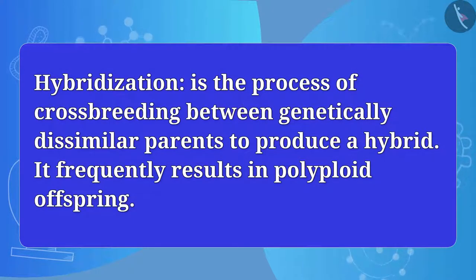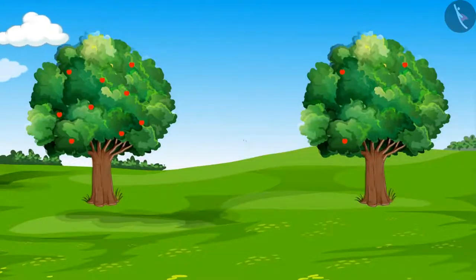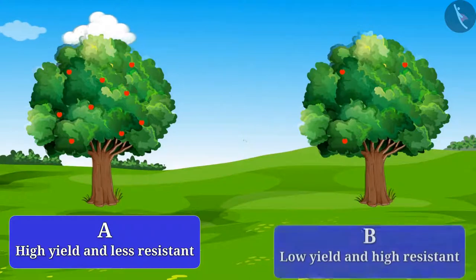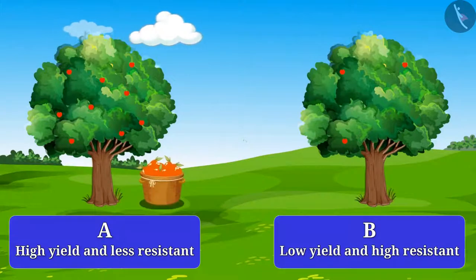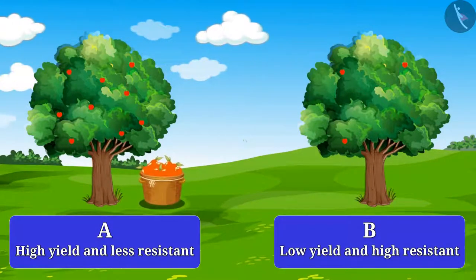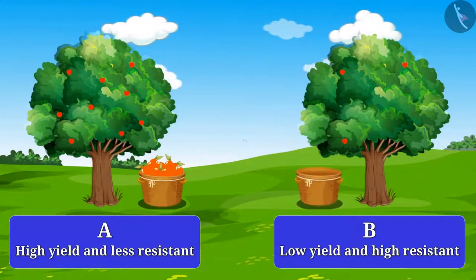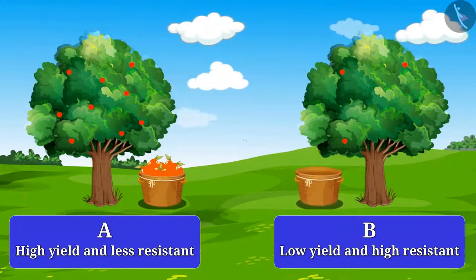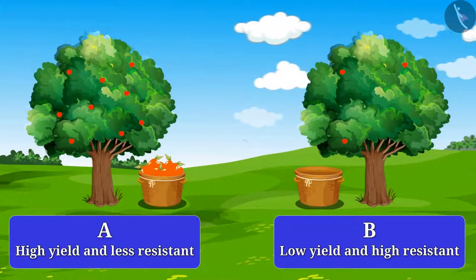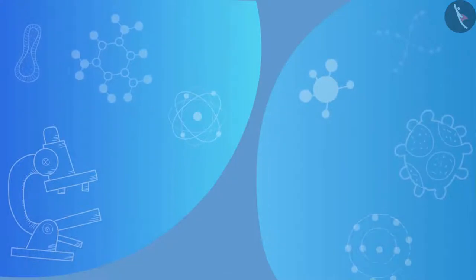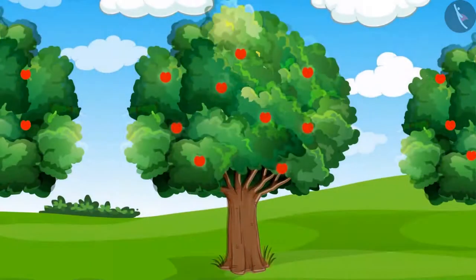Do you know what hybridization is? Let's understand. Suppose you have two types of trees, A and B. Tree A gives high yield and is less resistant towards disease, while tree B gives low yield and is highly resistant to disease.